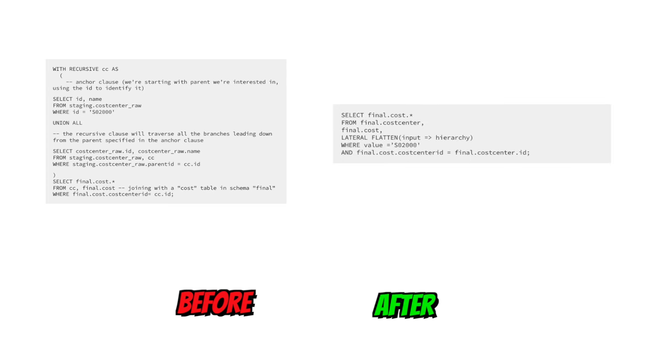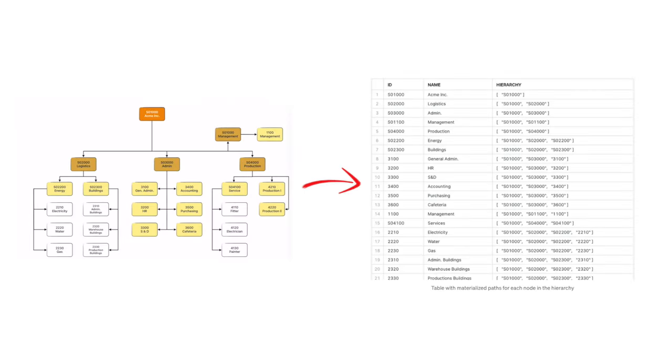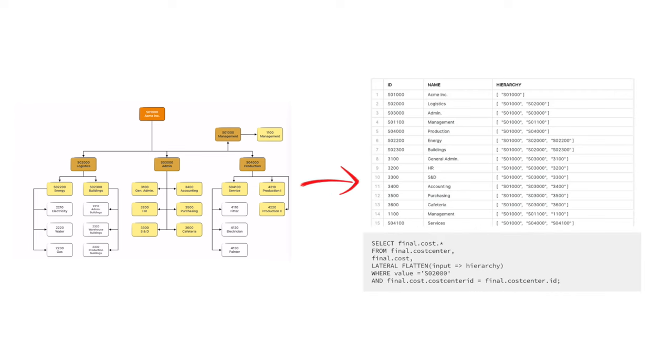The resulting table with all paths from our hierarchy persisted looks like this. And now our queries are much, much simpler to write and maintain. Here's a query that calculates the sum of all costs for logistics. It has gotten way simpler. And not only is it easier to write and maintain, but it's also much faster to execute. So it saves compute costs, but it also makes the work of a financial controller more efficient.